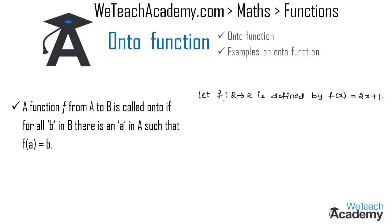If f from R to R is defined by f(x) equals 2x plus 1, then we have to prove that f(x) is an onto function. The given function is f(x) equals 2x plus 1. Let us prove the condition f(x) equals y.